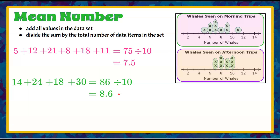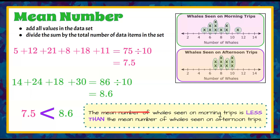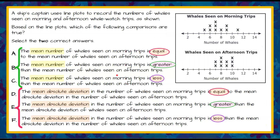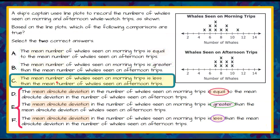The average number of whales seen on afternoon trips was 8.6, and on morning trips the mean was 7.5. So the mean number of whales seen on morning trips is less than the mean number seen on afternoon trips. We're going to select the less than option — that is answer choice C: the mean number of whales seen on morning trips is less than the mean number seen in the afternoon.